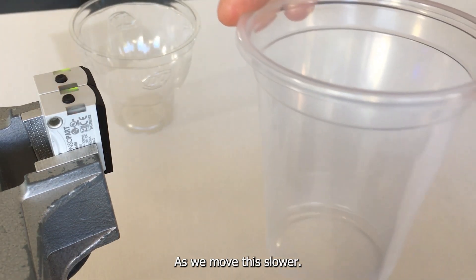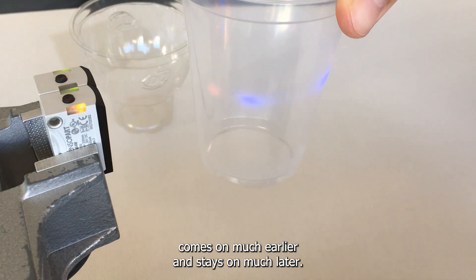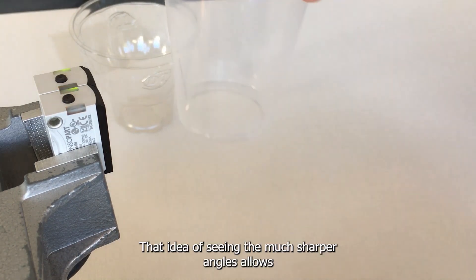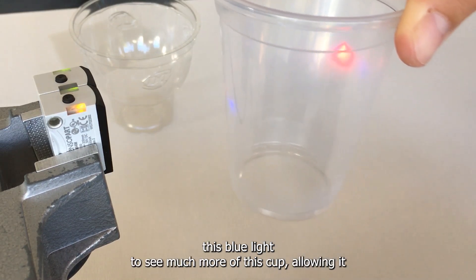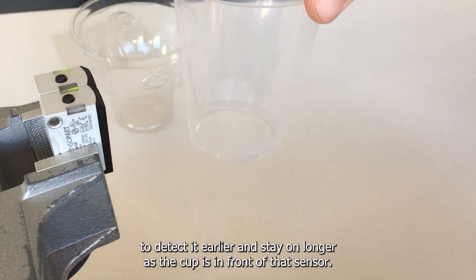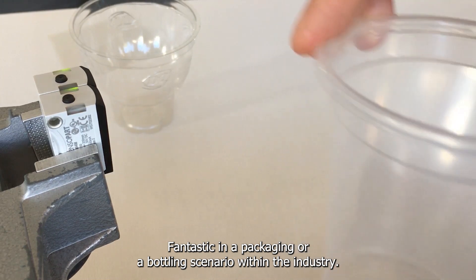As we move this slower we can actually see that the blue light comes on much earlier and stays on much later. That idea of seeing much sharper angles allows this blue light to see much more of this cup, allowing it to detect it earlier and stay on longer as the cup's in front of that sensor. Fantastic in a packaging or bottling scenario within the industry.